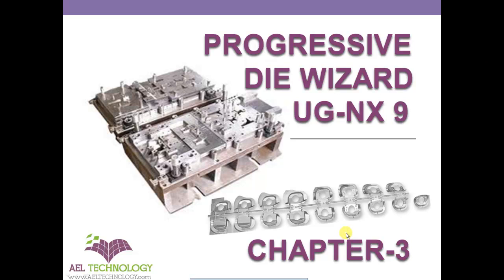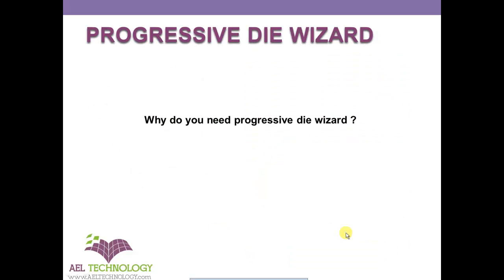We are in Chapter 3. In this chapter we will be discussing why we actually need a special tool called Progressive Die Wizard, and why we can't just use any other 3D software to do a die design. The reasons are that we can save a lot of time, it's very easy, we can eliminate a lot of human error, and since it's parametric it's always easy to redesign and redraw — and it's very accurate and precise.